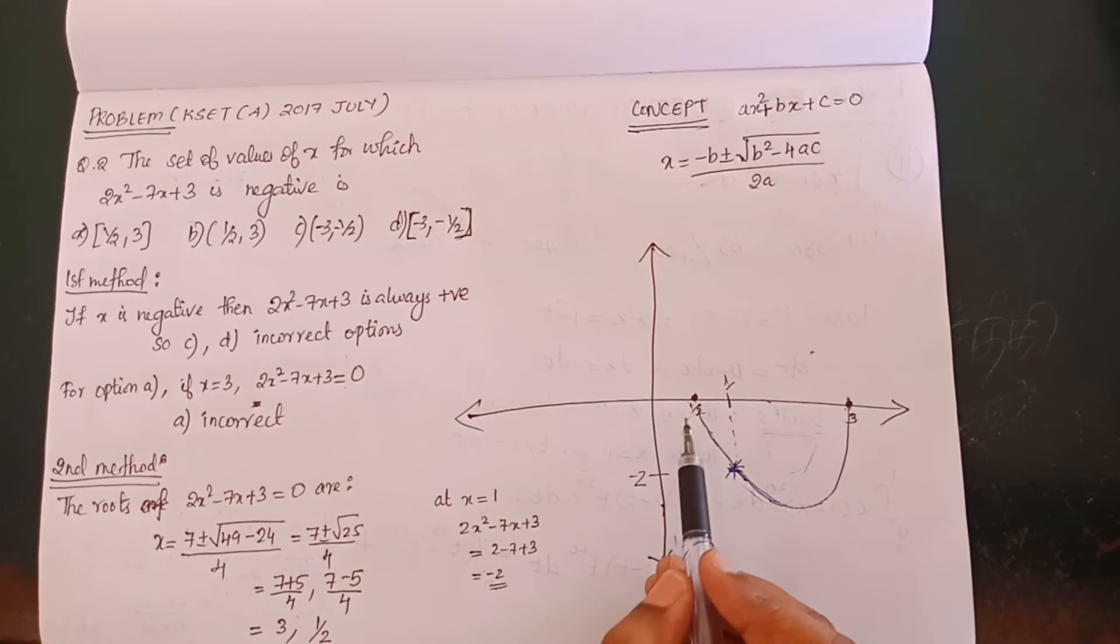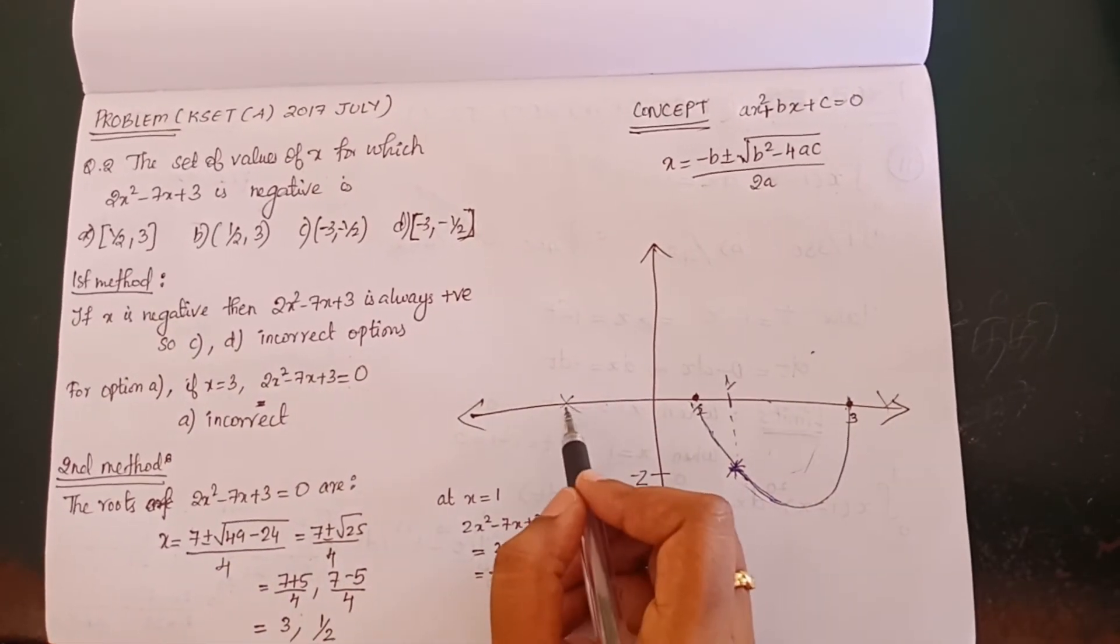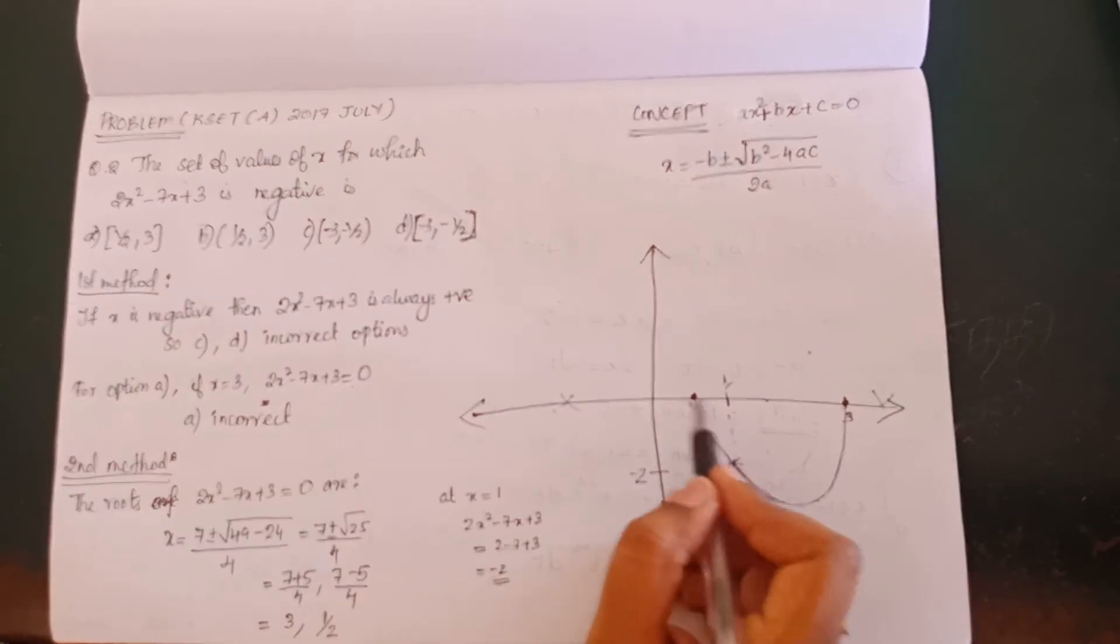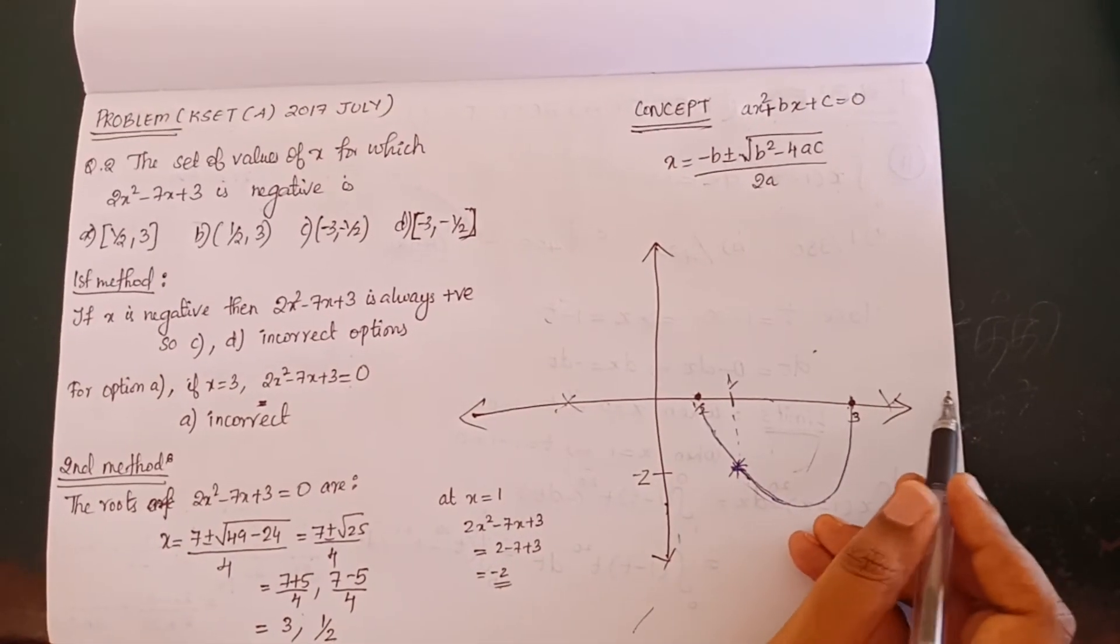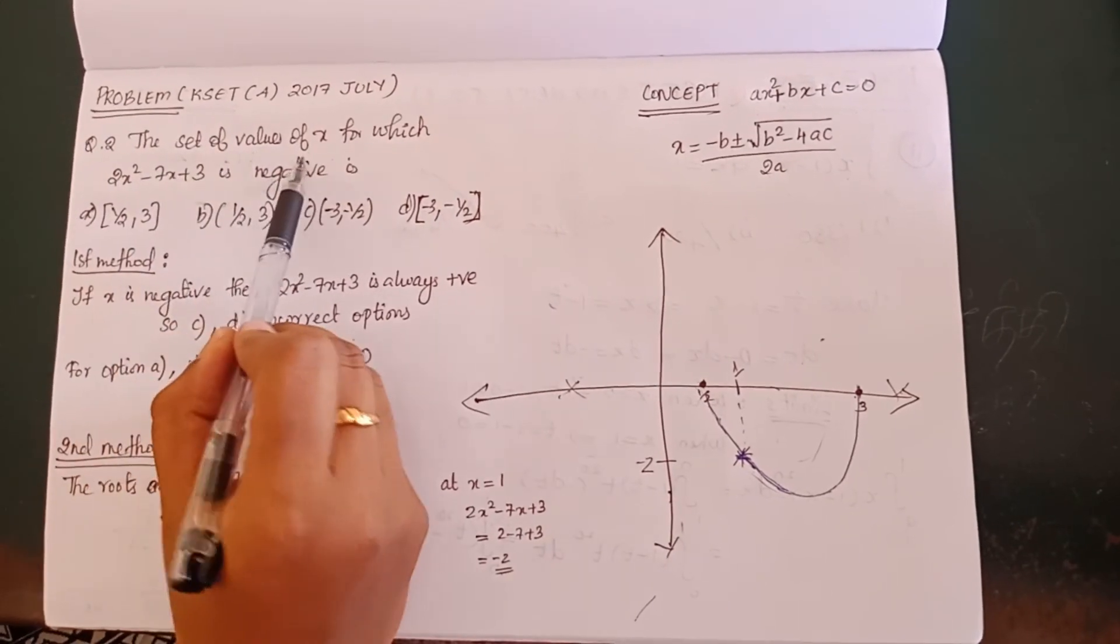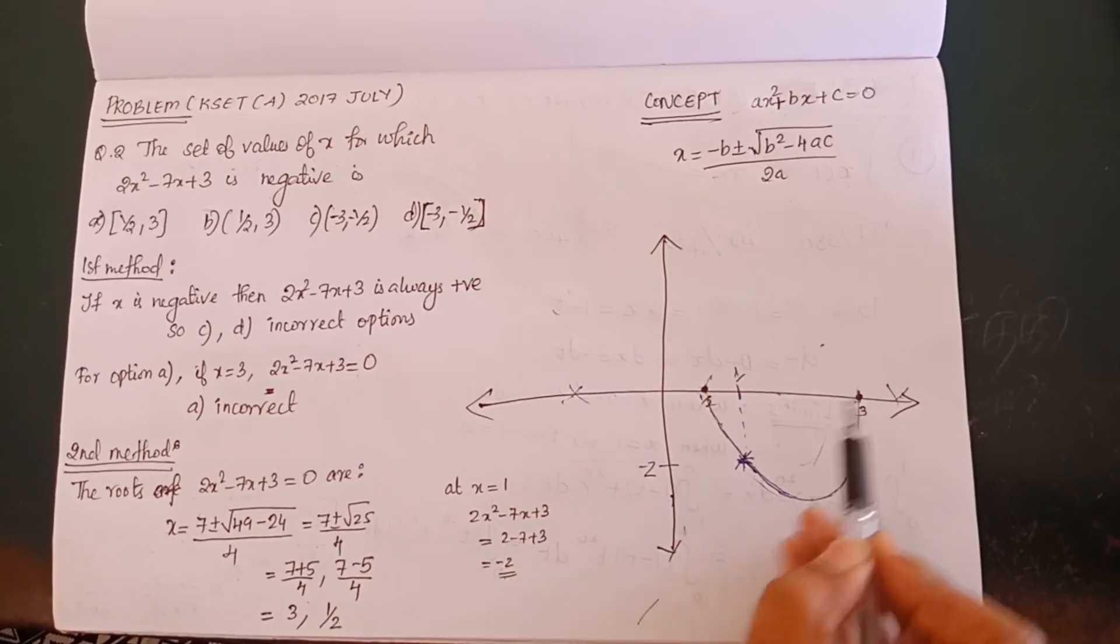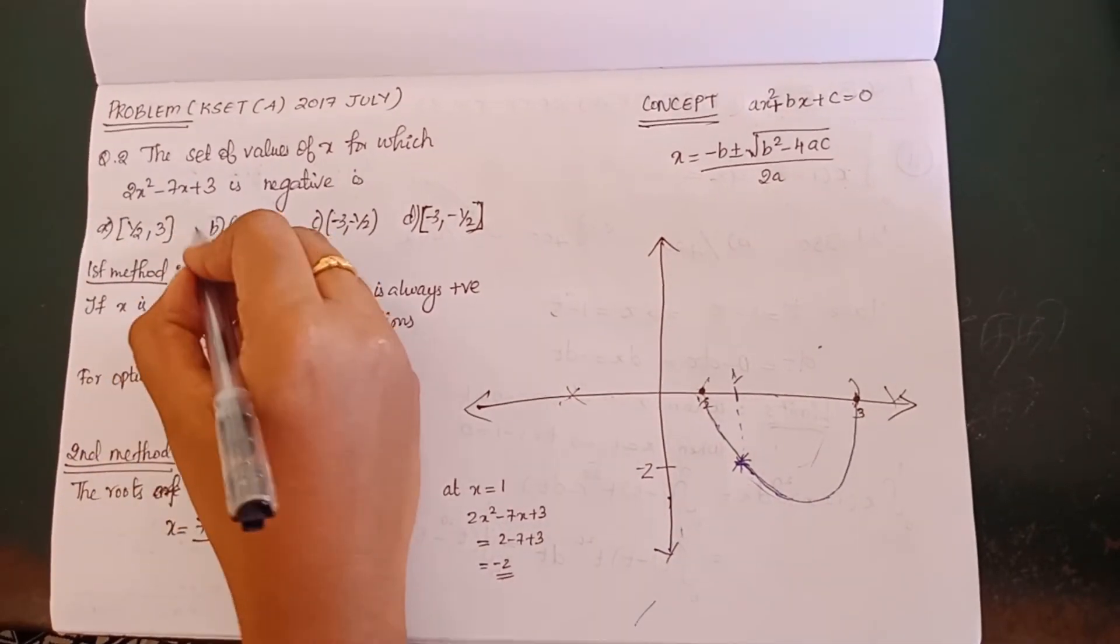If you have values outside the roots, the function is positive. Check the values: the set of values of x for which 2x² - 7x + 3 is negative is the open interval between the roots. So option B is correct.